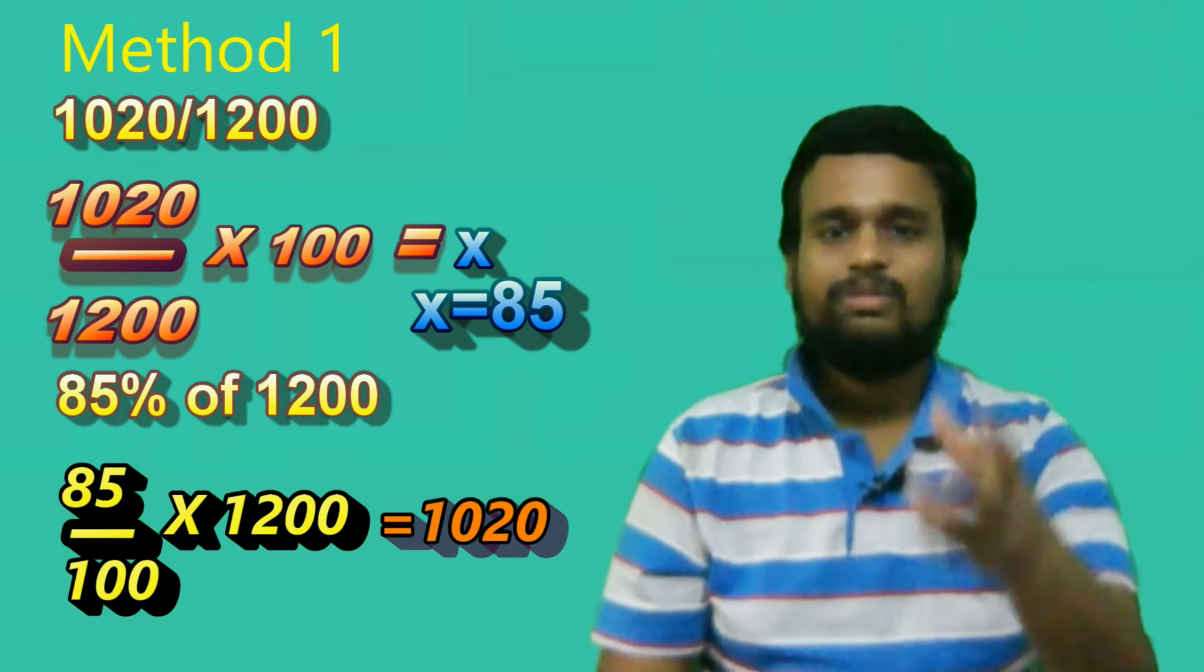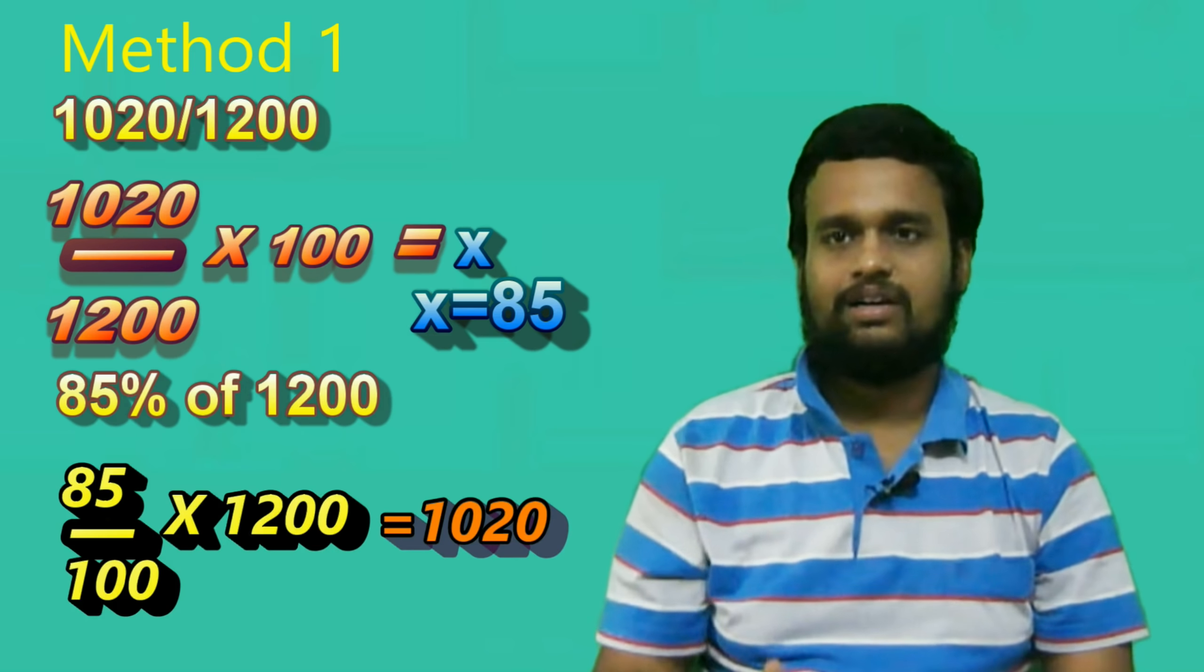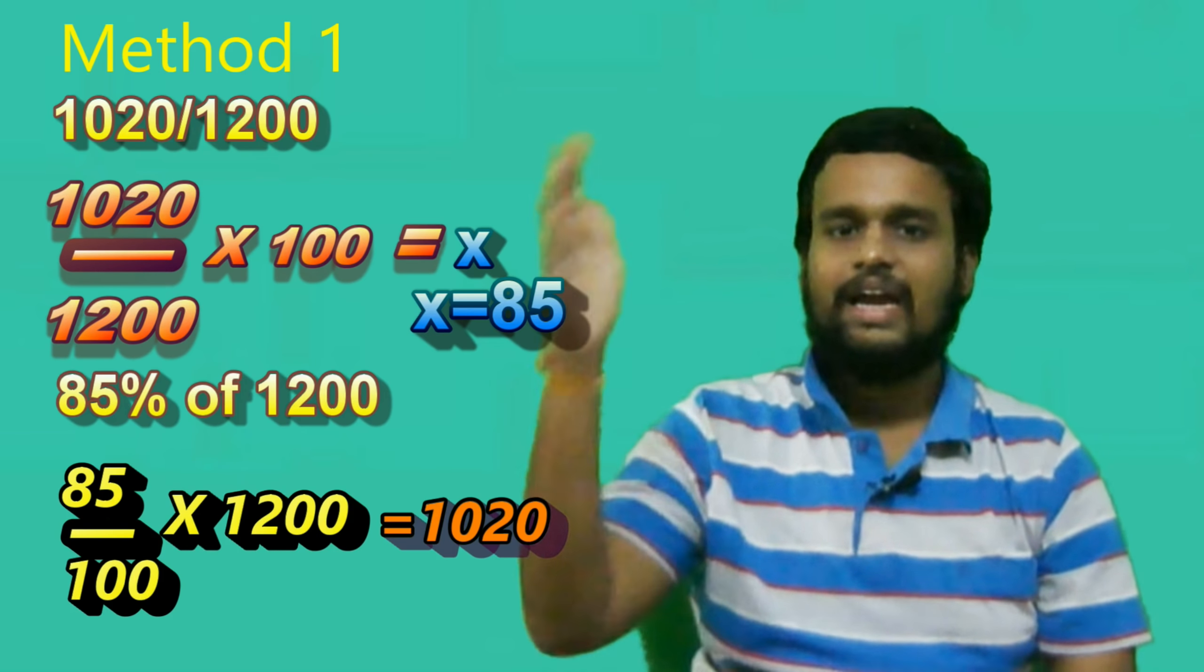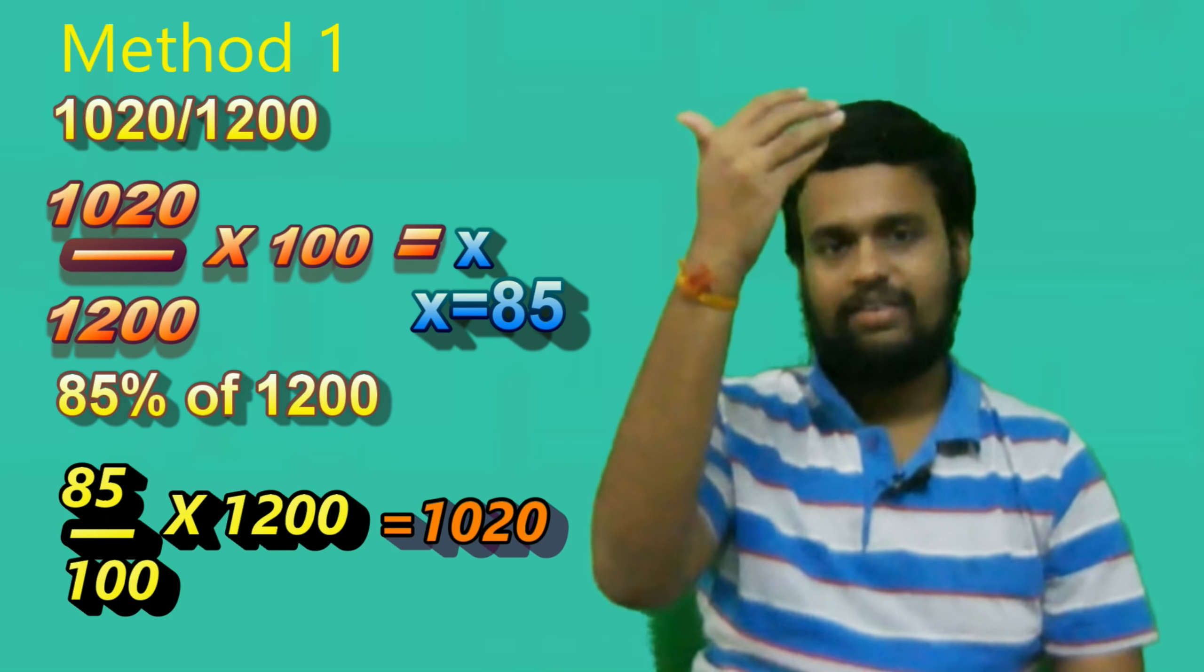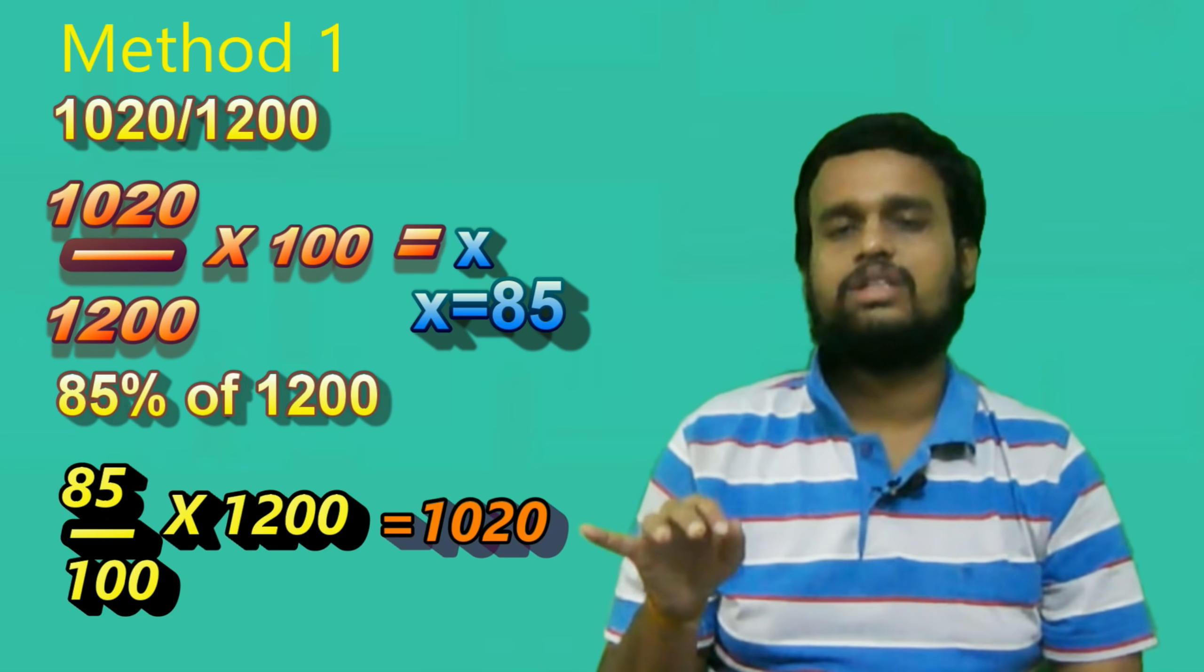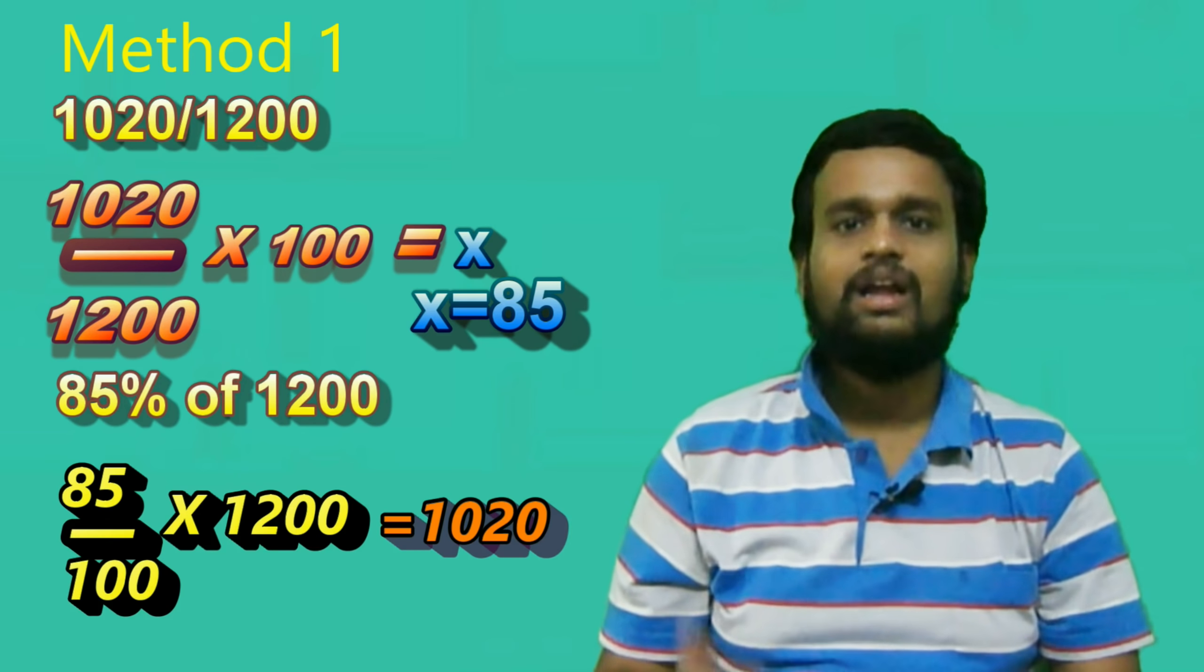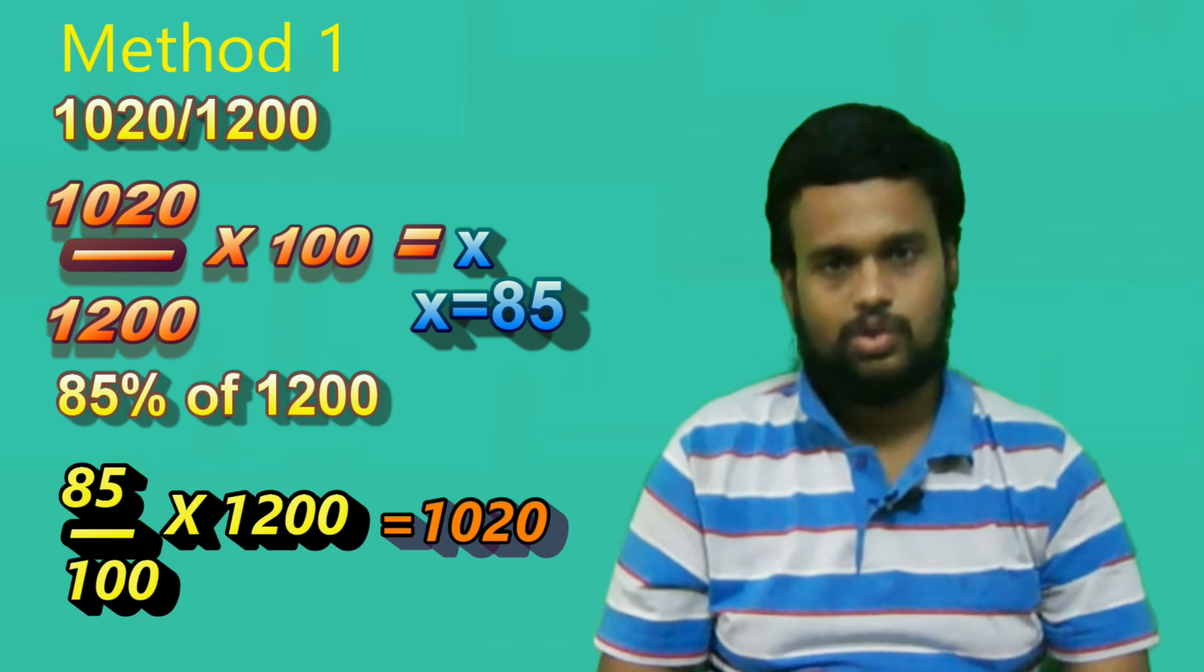Now, how do you calculate the reverse? If you want to find 85% of 1200, you calculate 85 divided by 100 times 1200. The largest number is the total number of marks. So 85 over 100 times 1200 equals 1020. That's a very easy method. Now we'll go to Method 2.